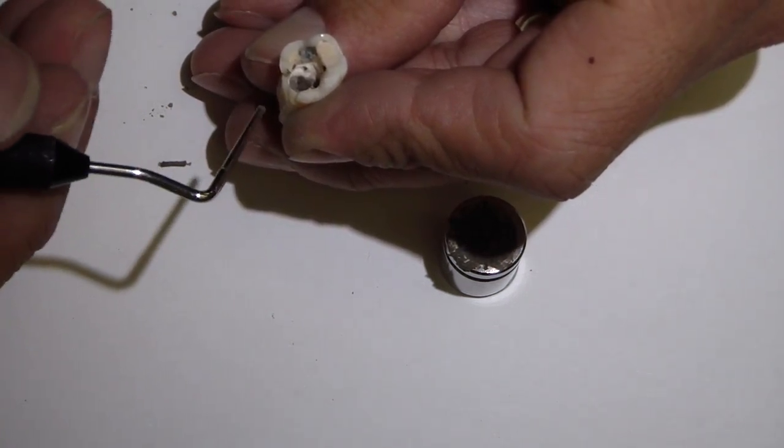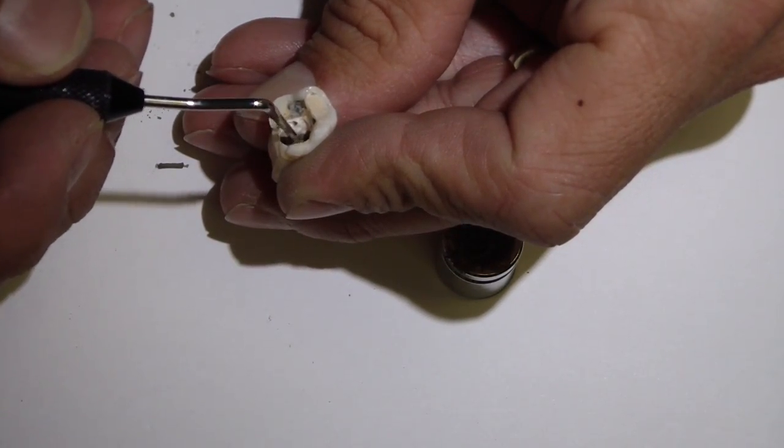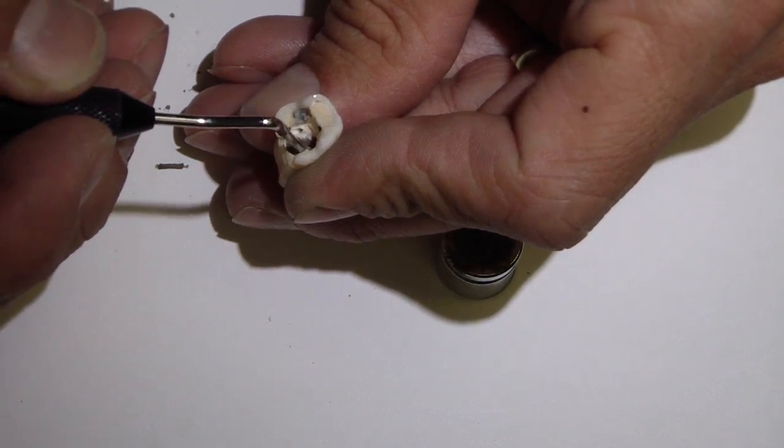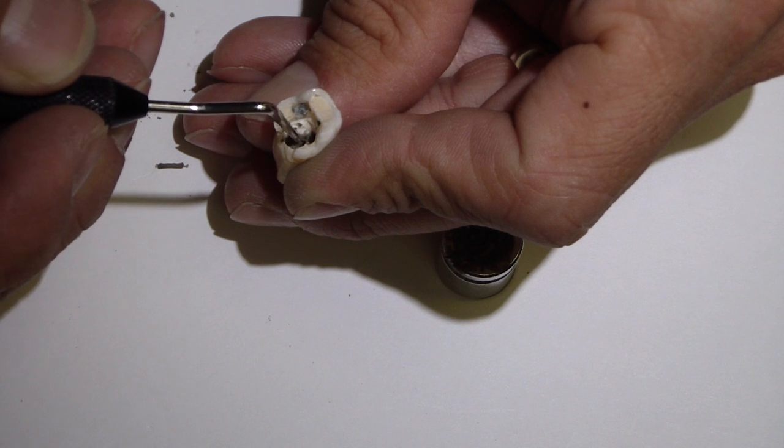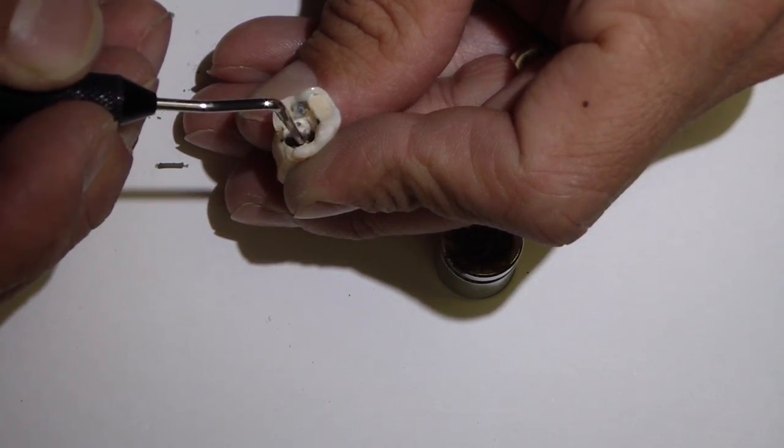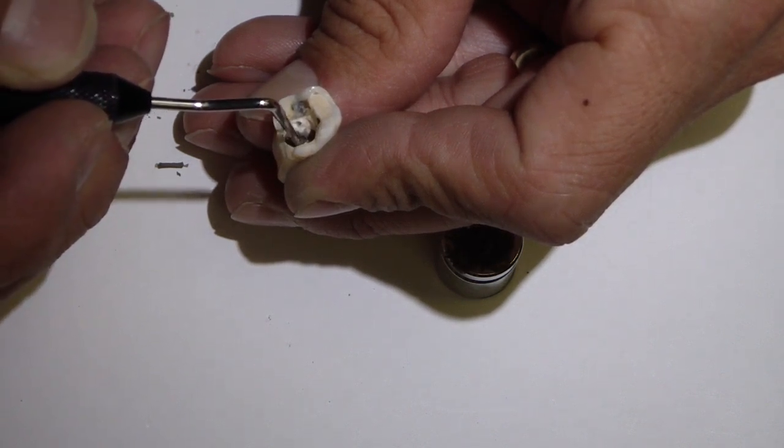Now take my condensing. And if you have ultrasonics, it's a good time to use ultrasonics to sort of place your packing instrument. Place your packing instrument, and then tap it with the ultrasonics. And then just sort of mix that around.